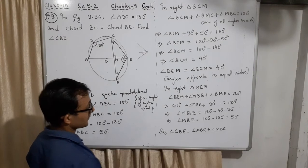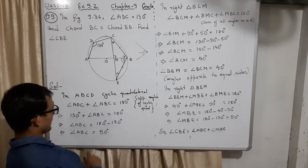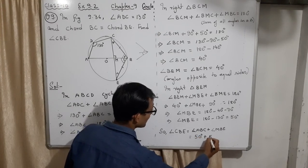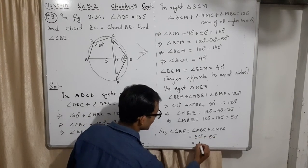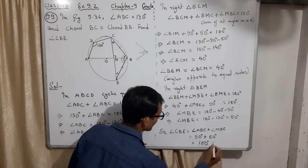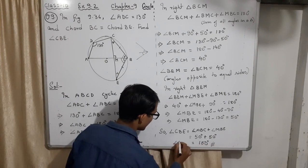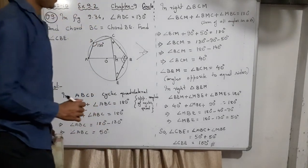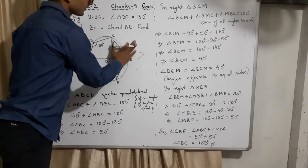Angle ABC plus angle MBE. ABC was 50 degrees. MBE is 50 degrees. Together it is 100 degrees. So angle CBE is 100 degrees. So that is all. Thank you.